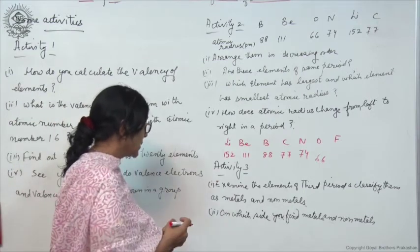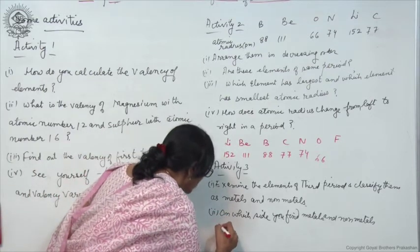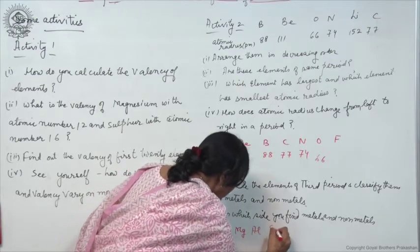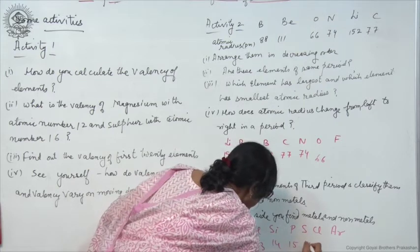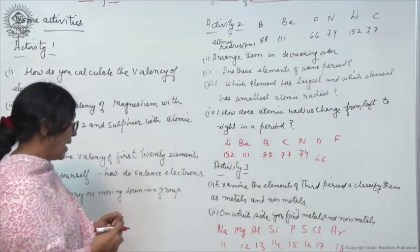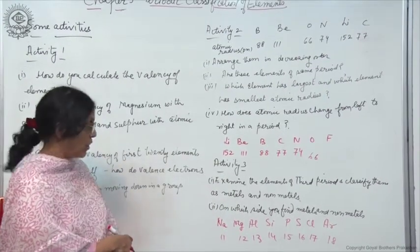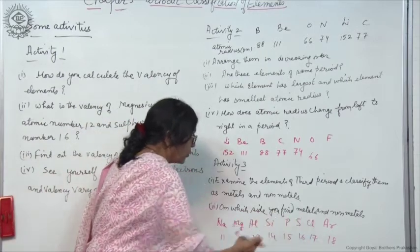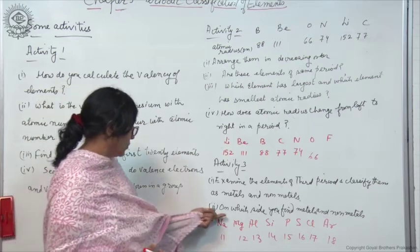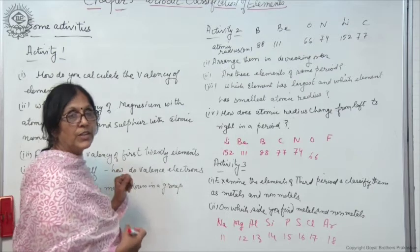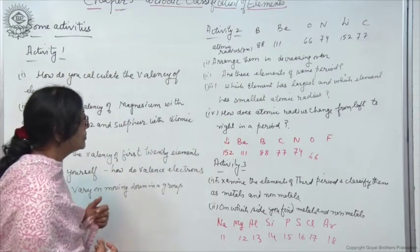Activity 3: examine the elements of the third period — sodium, magnesium, aluminium, silicon, phosphorus, sulphur, chlorine, and argon — starting from atomic number 11. Classify them as metals and non-metals. Sodium, magnesium, and aluminium are metals; silicon is a metalloid; phosphorus, sulphur, and chlorine are non-metals; and argon is a noble gas. Metals are found on the left-hand side and non-metals on the right-hand side.